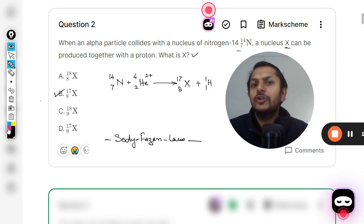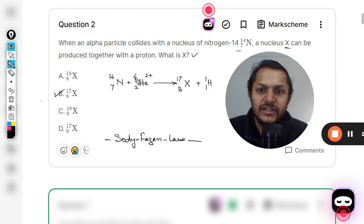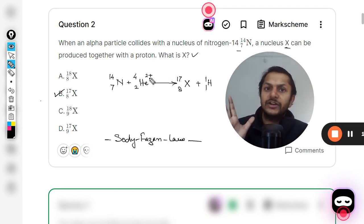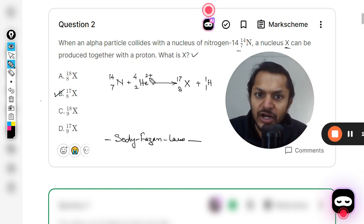So it is 14 plus 4 equals 18, so 17 plus 1 is 18. 7 plus 2 is 9, minus 1 is 8. The 2+ charge has nothing to do here—we are not talking about the charge now.